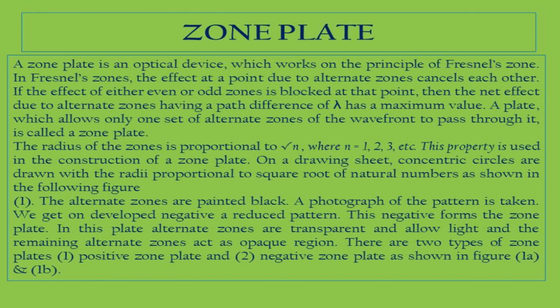To construct the half period zones, we take a sheet of paper and draw concentric circles with radii proportional to the square root of natural numbers. For example, the first half period zone has radius square root of 1 cm, the second is square root of 2 cm, the third is square root of 3 cm, and so on.